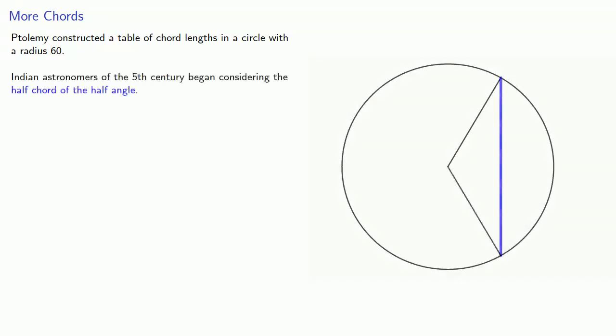Ptolemy constructed a table of chord lengths in a circle with a radius of 60. Indian astronomers of the 5th century began considering the half-chord of the half-angle.